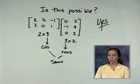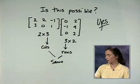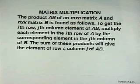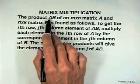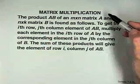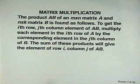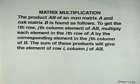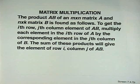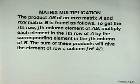Now I'm ready to define how to multiply matrices. The product AB — and it is important that A stays on the left and B on the right in matrix multiplication — of an M by N matrix A and an N by K matrix B is found as follows. To get the i-th row, j-th column element of AB, multiply each element in the i-th row of A by the corresponding element in the j-th column of B. The sum of these products gives the element of row i, column j of AB.